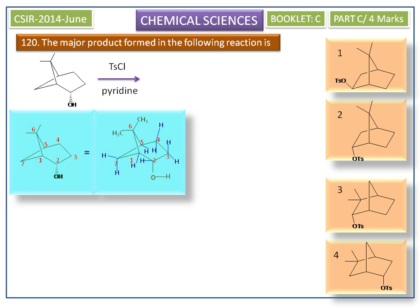This is treated with p-toluenesulfonyl chloride in the presence of pyridine. The OH group attacks the electrophilic center of the tosylate, displacing a chloride ion.